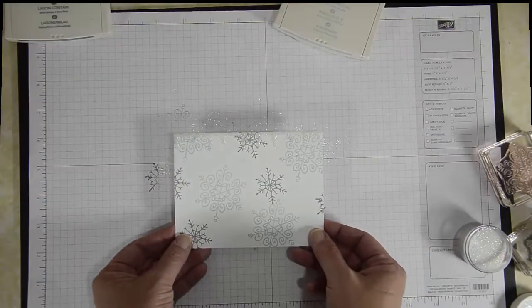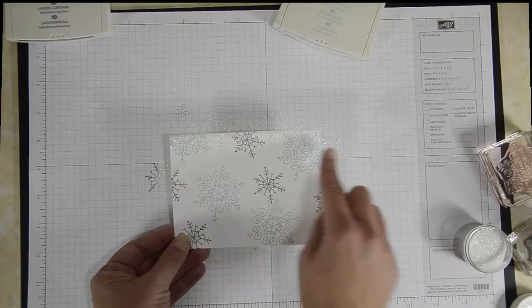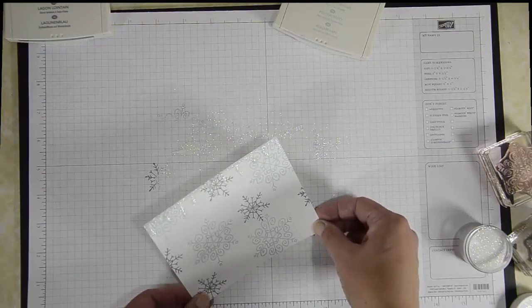Tap off the excess, and then you have your icicle effect along the top edge of the card.